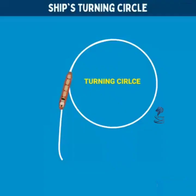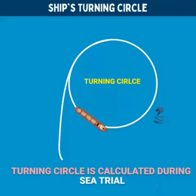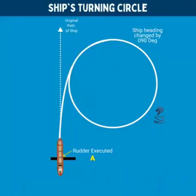When a vessel is made to turn under a continuous helm through 360 degrees, it will follow a roughly circular track called the turning circle. The turning circle of a ship is calculated during the sea trials. Let us assume at point A,